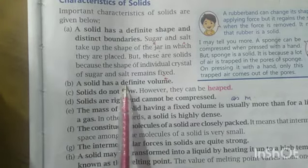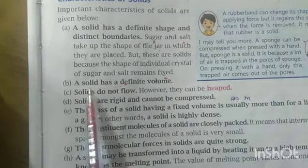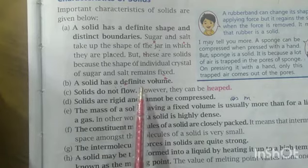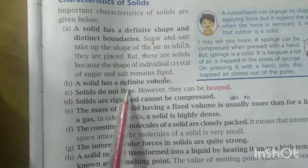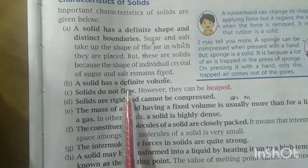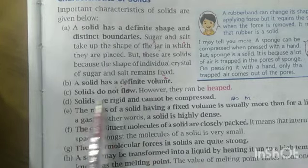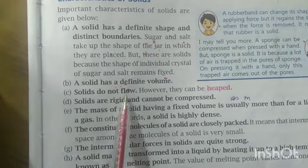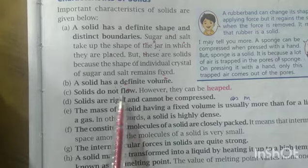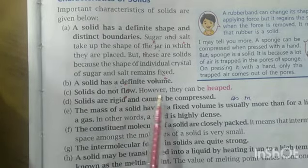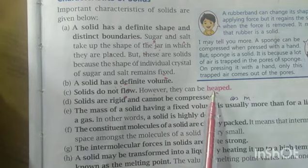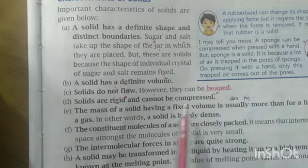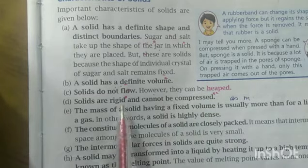A solid has definite volume — the volume of the solid remains fixed and will not change because of the fixed position of the molecules. Solids do not flow because the force of attraction between molecules is very high and intermolecular space is less, so molecules remain fixed to their position. They do not flow like liquid or gases. However, many solids can be collected and put together, but they cannot flow.